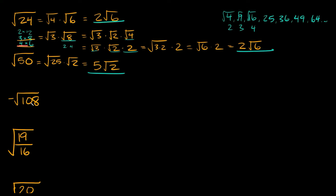Here we have the negative square root of 108. Nothing's different — we're just going to tack on a negative sign at the very end. For 108, the most convenient factoring is 36 times 3. So the square root of 36 times the square root of 3 — the square root of 36 is a perfect square equal to 6. That gives us 6 times the square root of 3, and since the original problem was negative, our answer is negative 6 root 3.